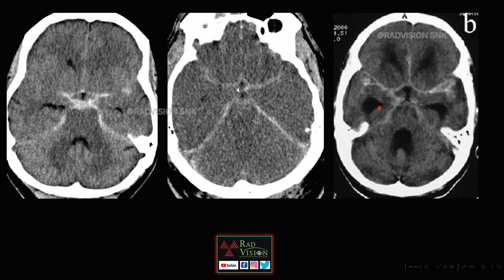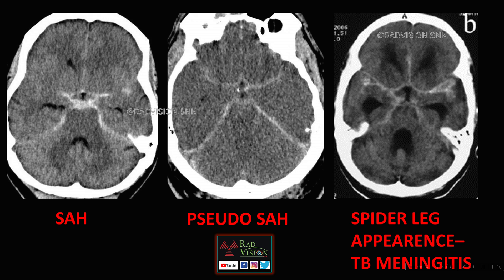In the third case, a post-contrast study in a patient presenting with fever shows enhancing exudates — hyperdense enhancing exudates along the falx, along the sylvian fissures, along the basal cisterns, and along the tentorial leaves. All three have similar imaging appearances but different diagnoses: SAH, pseudo-SAH appearance, and spider-leg enhancing basal exudates in tubercular meningoencephalitis.